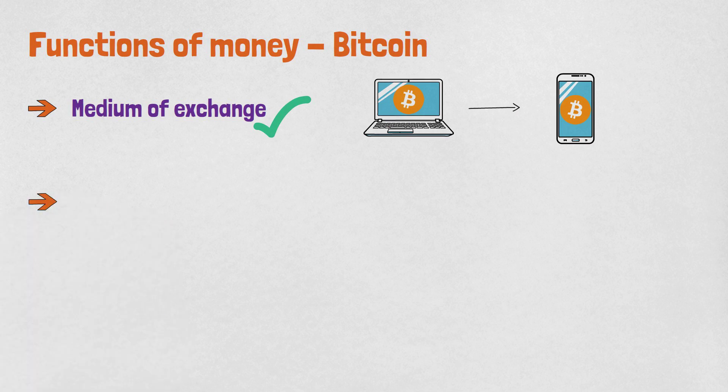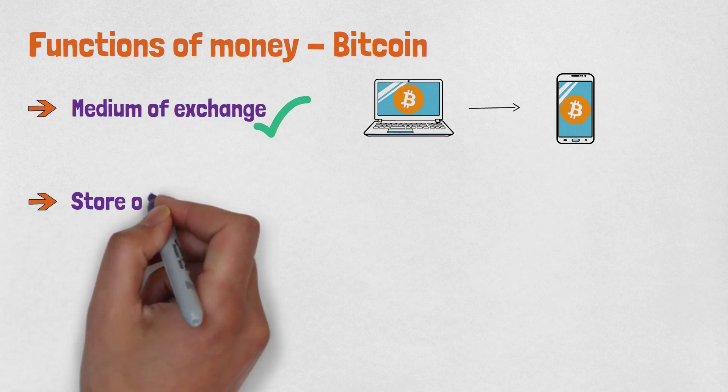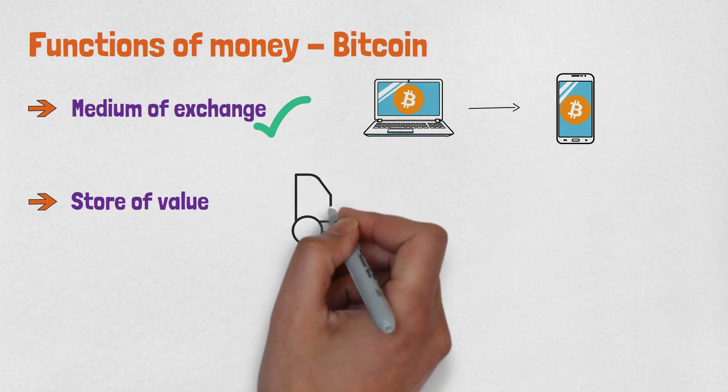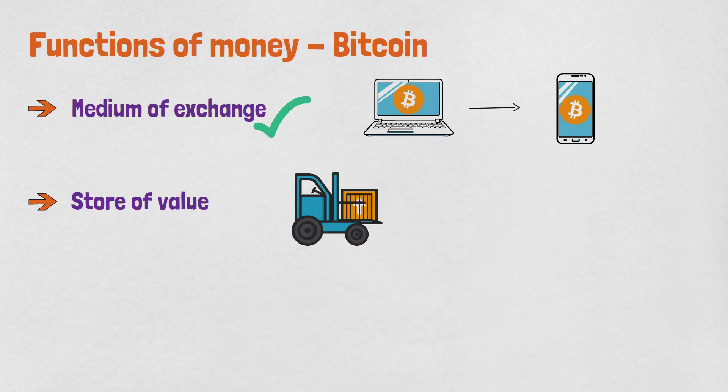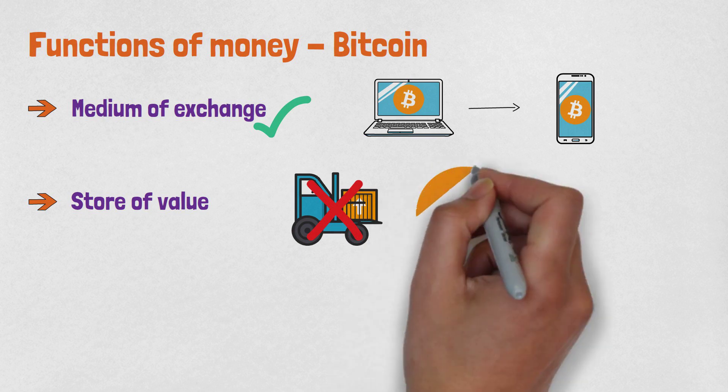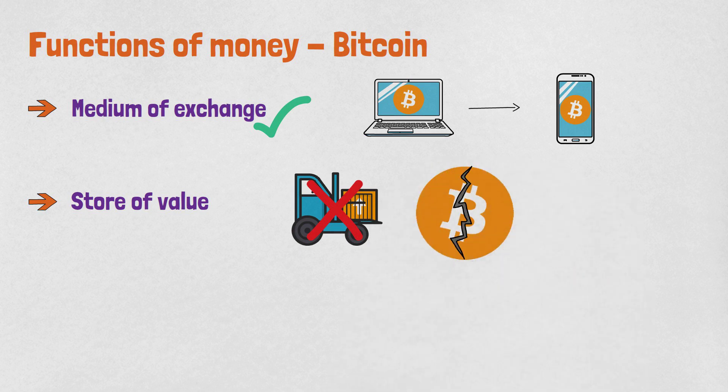Now, as a store of value, Bitcoin checks the most important metric and that is salability across time and space. Bitcoin is extremely efficient when it comes to transactions because it has no physical form so there are no transportation troubles. Since it physically doesn't exist, it cannot be damaged or destroyed.